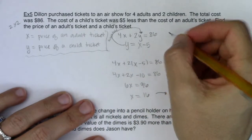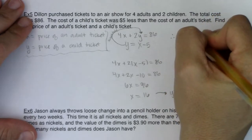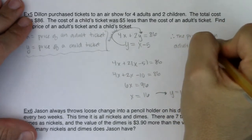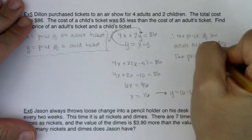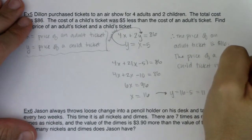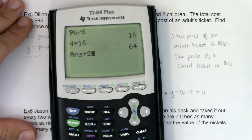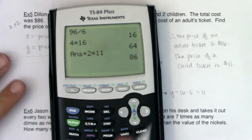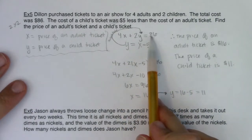I'm going to write my solution in a sentence using units: the price of an adult ticket is $16, and the price of a child ticket is $11. Let's check — if we bought four adult tickets and added two child tickets, sure enough, we're spending $86. It's always a good idea to check your solution. That's one of my favorite things about systems of equations: you can check your answers against your original work, and if it works out, you got the answer right.